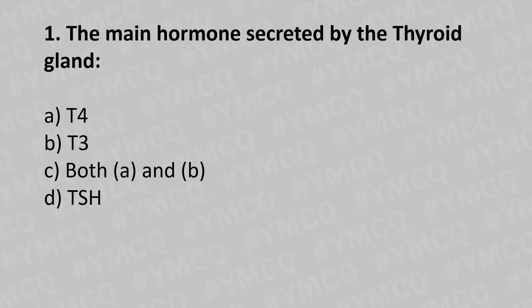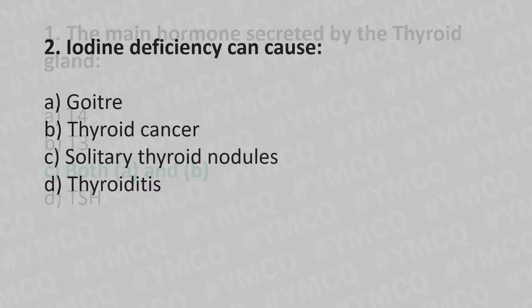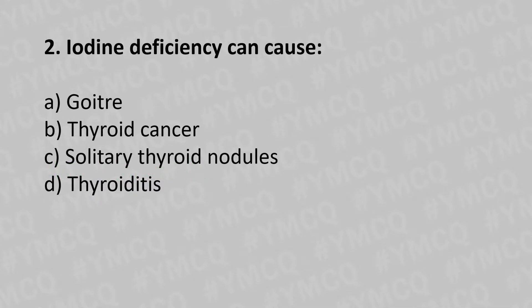The answer is option C - both A and B. Now let's move to question number two. Iodine deficiency can cause: option A - goiter, option B - thyroid cancer, option C - solitary thyroid nodules, option D - thyroiditis. The answer is option A - goiter.